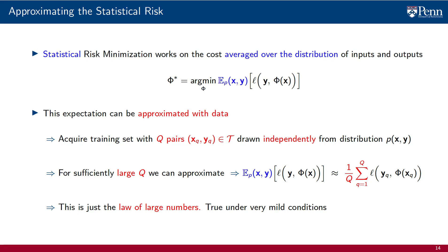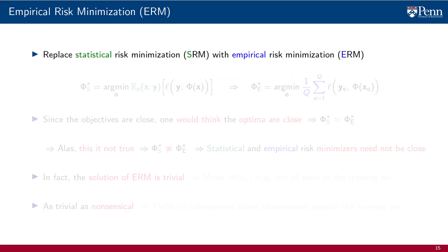We may quibble over the meaning of what it means for the number of samples Q to be large, or what it means that the empirical and statistical risks are close. Conceptually, however, the proximity of these two quantities holds under very mild conditions. One would therefore be very well justified in replacing statistical risk minimization with empirical risk minimization. Thus, instead of learning the optimal statistical classifier phi*_s, which minimizes the statistical average of the point-wise losses, we learn the optimal empirical classifier phi*_e, which minimizes the empirical average.